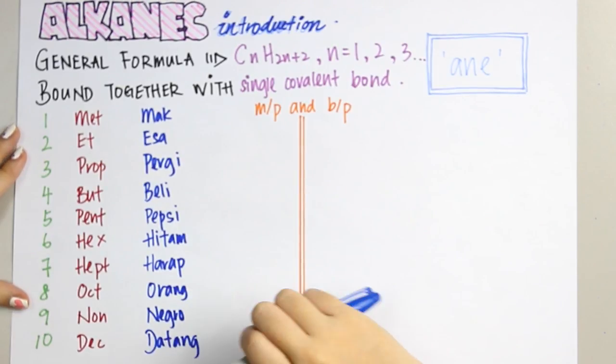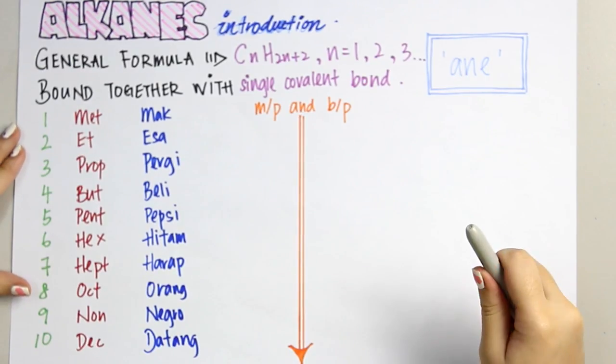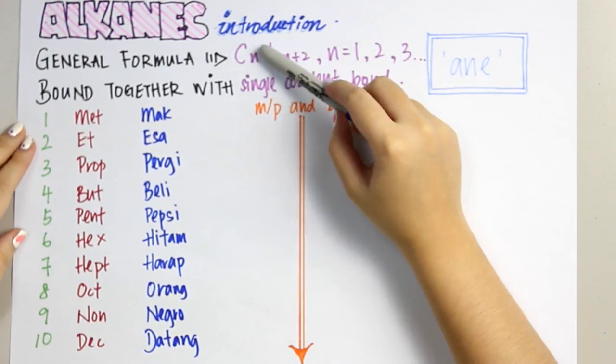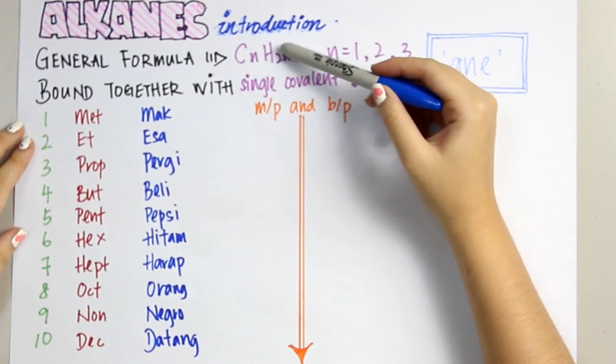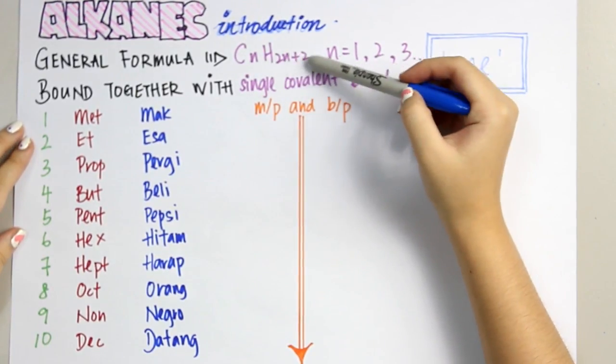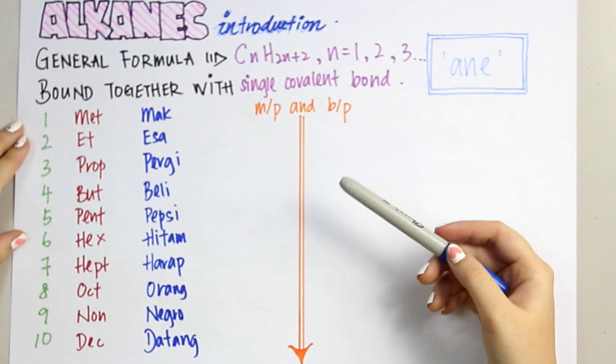We solve the formula with n equals 1, so H2(1)+2, which gives us CH4 for methane. This is how we calculate the formula of alkane compounds.